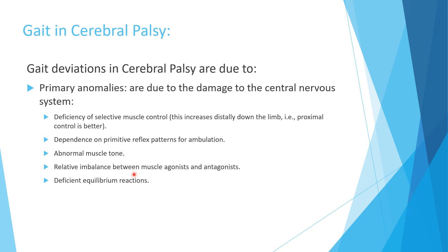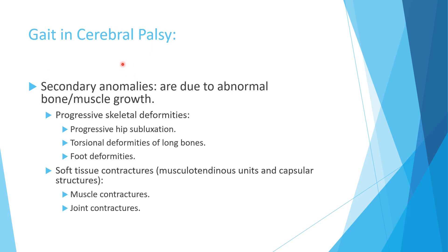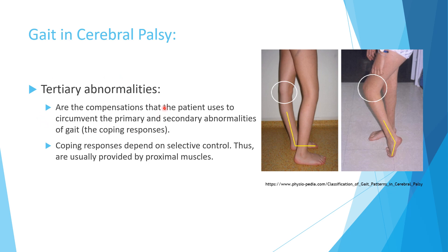Secondary anomalies are due to abnormal muscle and bone growth — musculoskeletal manifestations of the injury. Children develop progressive skeletal deformities: progressive hip subluxation, torsional deformity of bone, excess femoral anteversion, foot deformities, and soft tissue deformities including muscle contracture and joint contracture.